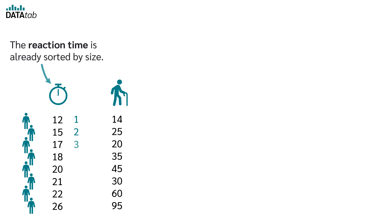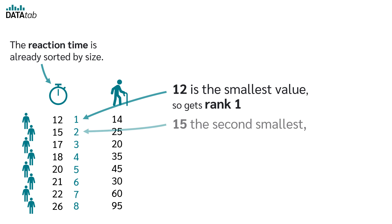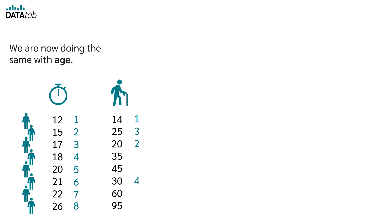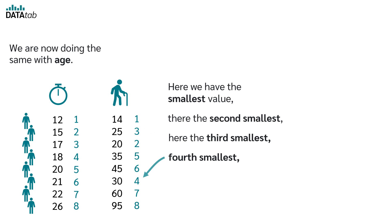The reaction time is already sorted by size. 12 is the smallest value, so gets rank 1; 15 the second smallest, so gets rank 2, and so on and so forth. We do the same with age: the smallest value gets rank 1, the second smallest gets rank 2, the third smallest rank 3, fourth smallest, and so on.